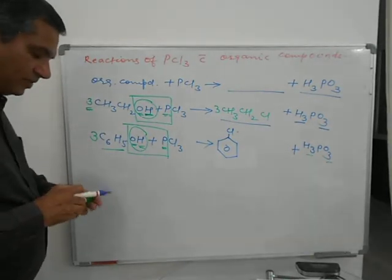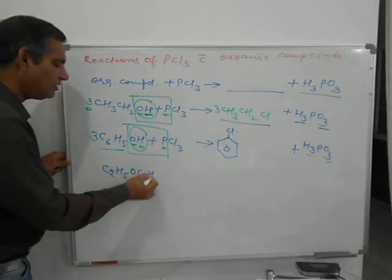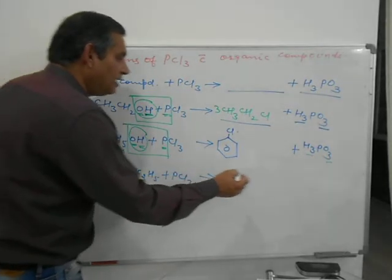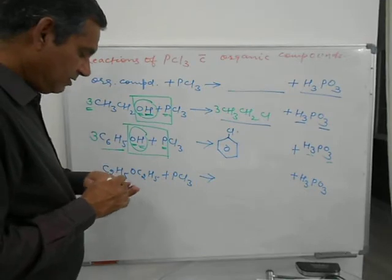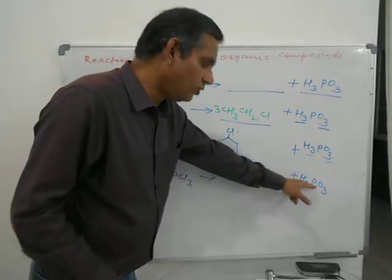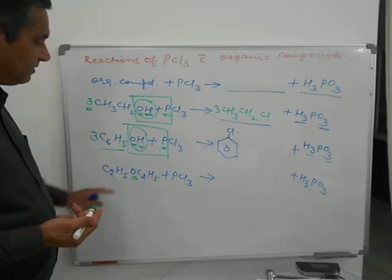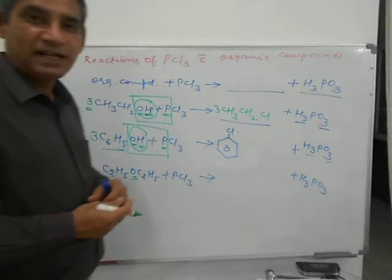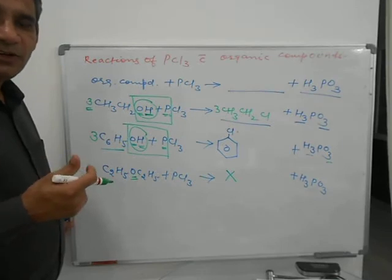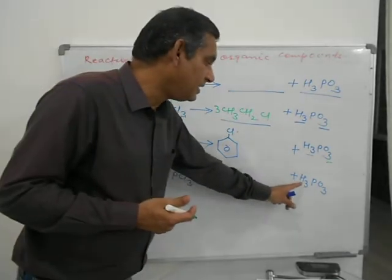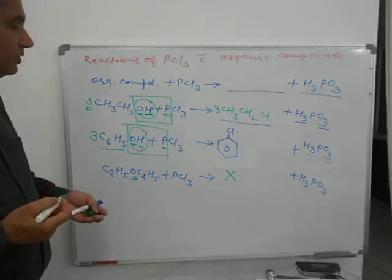Now consider C2H5-O-C2H5 (diethyl ether) plus PCl3. Again the product should be H3PO3. But from where do you take H and O? They come from the functional group. In ether, the functional group is -O-, and in this functional group there is no H. So how can H3PO3 be formed? Therefore, this reaction is not possible. You should know valency, balancing, and the point that H and O in H3PO3 come from the functional group — then it is easy to determine this.